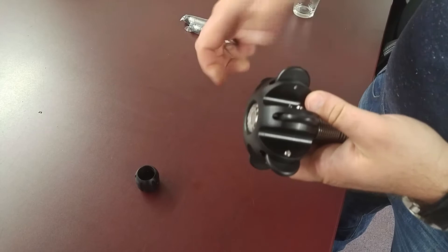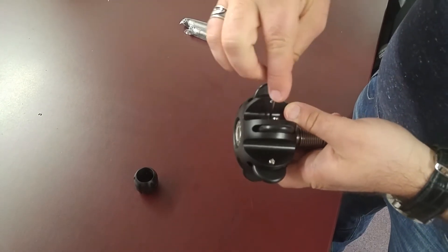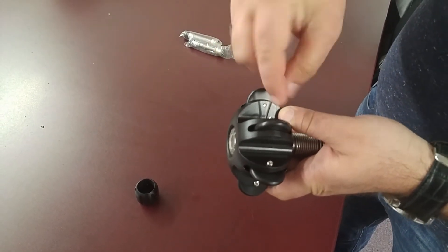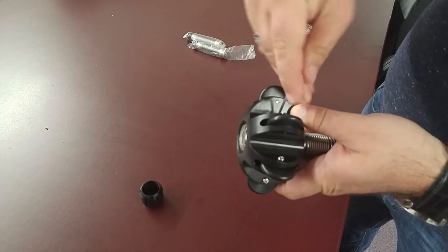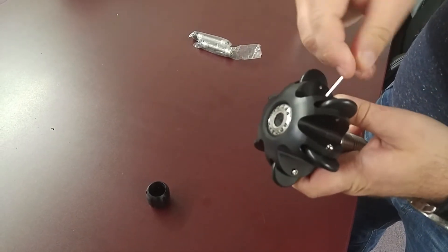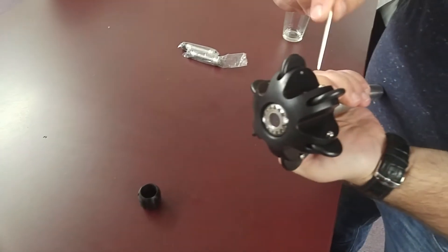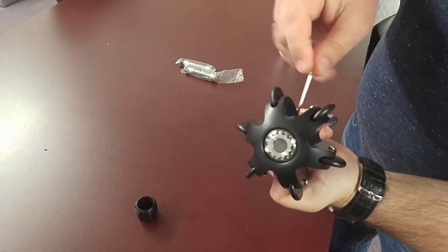This will fit over top and then you're just going to use the allen key to tighten it down. So you're going to go in here, screw it down on this side, wait for the connection to be tight and then flip it over and screw the direct opposite side.